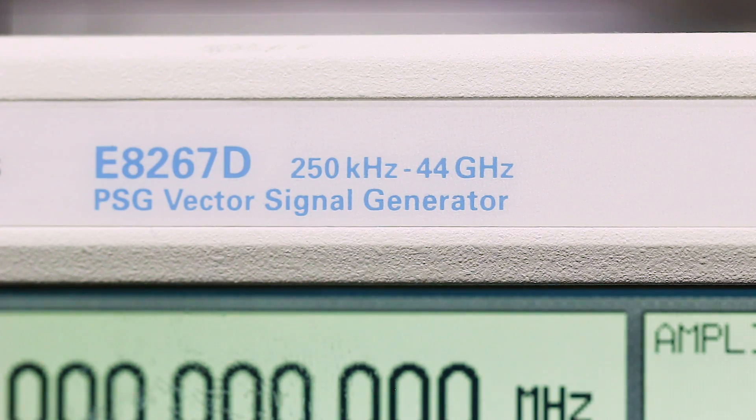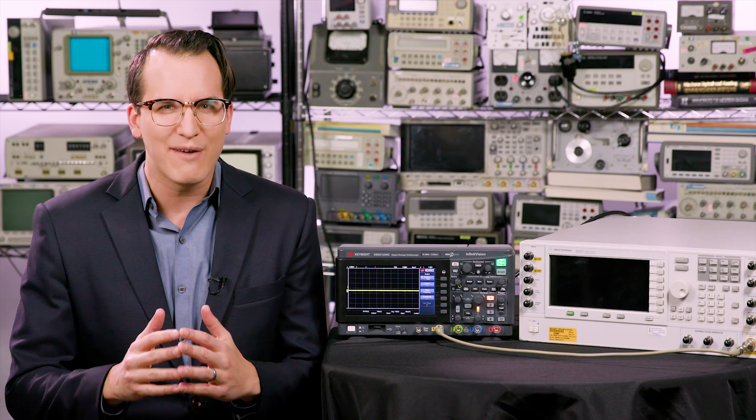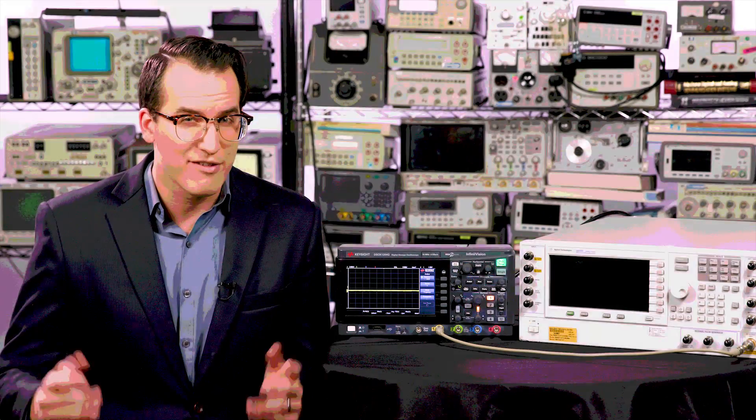This is all already in place with the trigger comparators and scope processor. I also just happened to have this signal generator which goes up to 44 gigahertz. So the question becomes how high of a frequency can we measure? Let's find out.